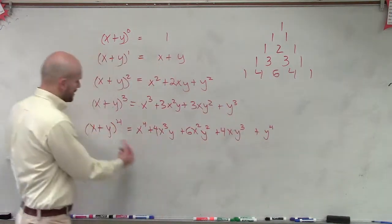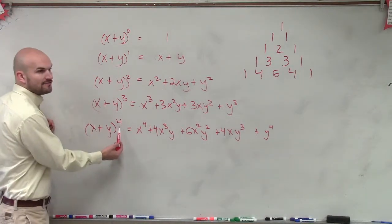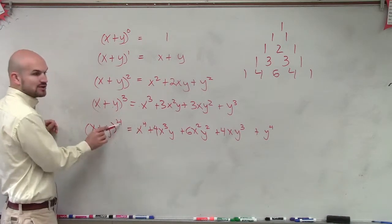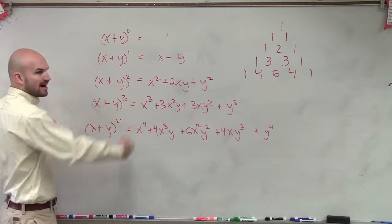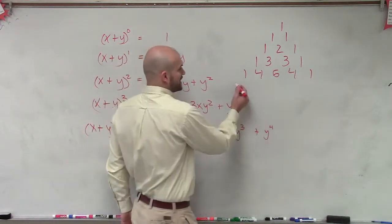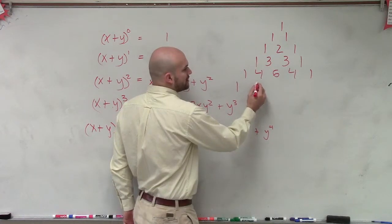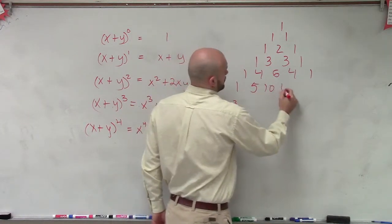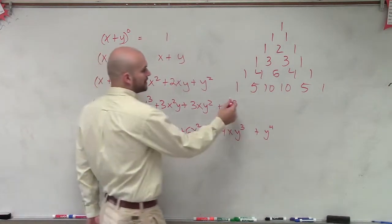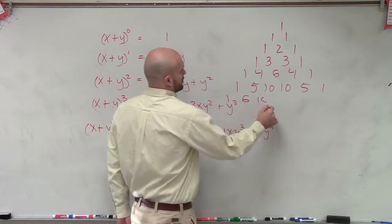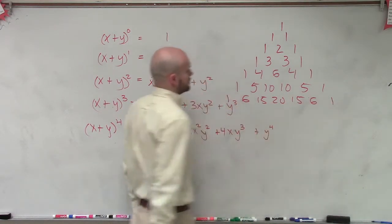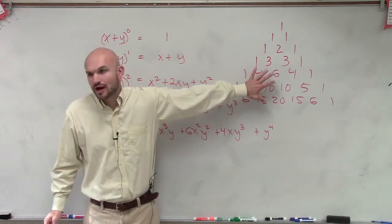So we now know — I talked about it in the binomial expansion — we know how to find how the variables go. It starts with your degree, and then the x's decline and the y's increase. And now looking at the coefficients, we can simply say the next row's coefficients follow the same pattern. And this is what we call Pascal's Triangle.